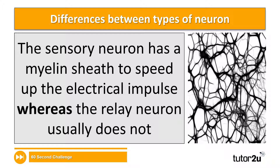You'll see there that I've highlighted the word 'whereas.' When you're answering a difference question related to anything within A-level psychology, it's really important to include the word whereas. You might have focused on something different — for example, structurally, you could have looked at how the sensory neuron is pseudo unipolar, whereas the relay neuron isn't.